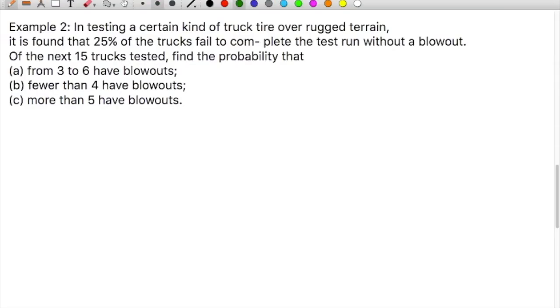I'll read the problem for you. In testing a certain kind of truck tire over rugged terrain, it is found that 25% of the trucks failed to complete the test run without a blowout. So the probability of getting a failure is 0.25. The total number of trucks tested is 15. Find the probability in the first part: from 3 to 6 have blowouts.